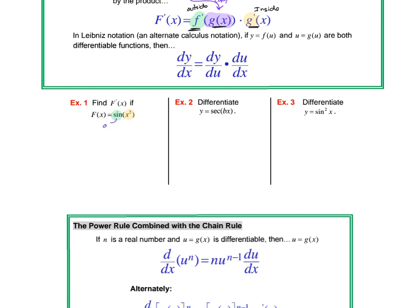The sine is the outside function and x squared is the inside function. We always start on the outside and work in. So the first thing we do is take the derivative of our sine: f prime of x equals the derivative of sine, which is cosine. We copy the inside function, then multiply by the derivative of the inside function, which is 2x. The derivative of x squared was 2x, the derivative of sine was cosine, and the inside part stayed the same in our first derivative.